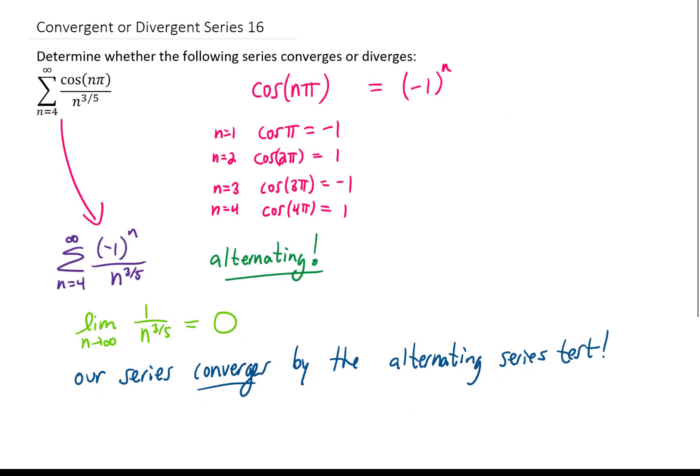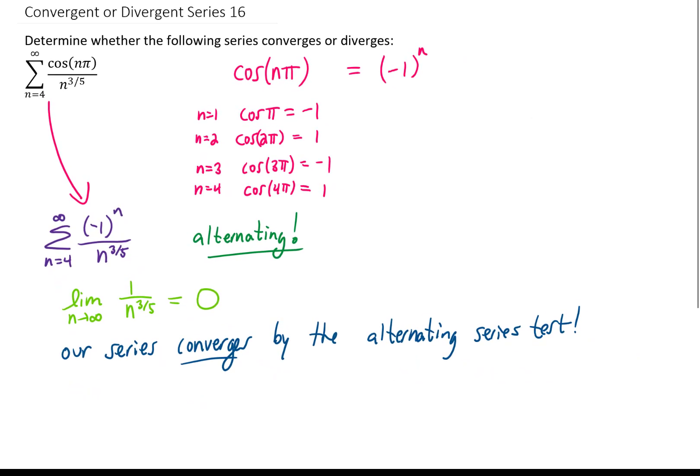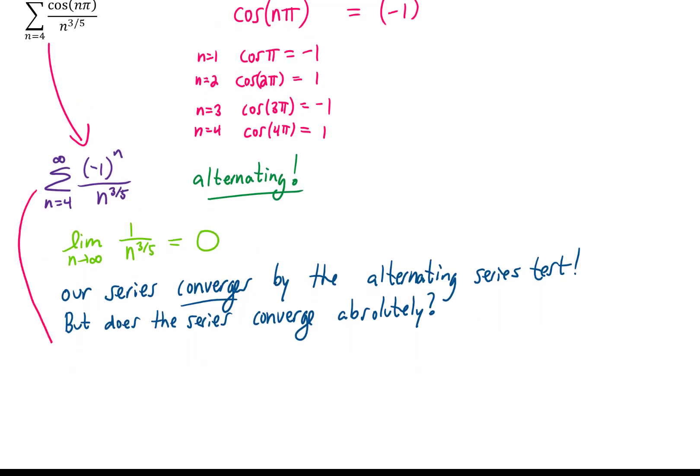Now that is great, but we may want to know whether or not this series converges absolutely. To answer that question, we have to look at the series without the alternating part on it. Well, as it turns out, this is a p-series. p equals 3 fifths in this case. That 3 fifths is less than 1, so this particular series diverges.